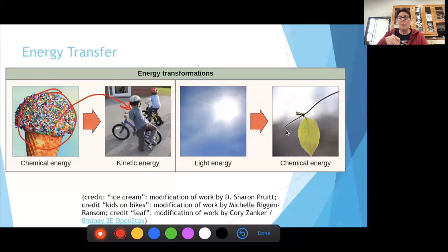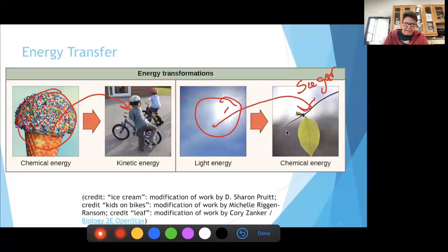ATP allows us to move around and ride our bicycles, which is kinetic energy. We also have solar radiation, our light energy being converted to chemical energy, making sugar. We're using that solar energy to put those covalent bonds together in carbon dioxide and water to make sugar in the process of photosynthesis.